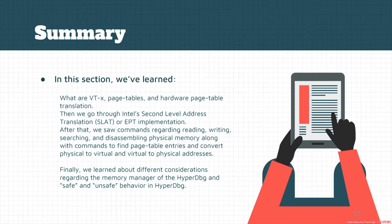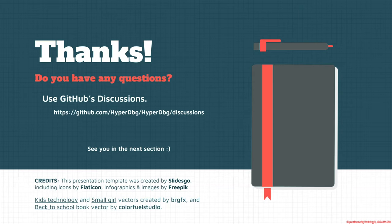In summary of this section, we covered VTX basics and primitive concepts about page tables and hardware page table translation, then SLAT or EPT, followed by commands for reading, writing, searching, and disassembling physical memory. We also covered how to convert page tables between physical and virtual addresses, and finally the considerations for using HyperDbg in safe and unsafe states. Thanks for watching — the source code used in this tutorial is available in the files. Have a nice day.